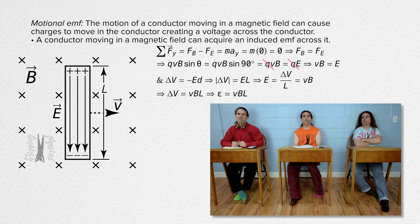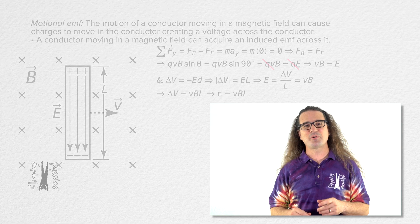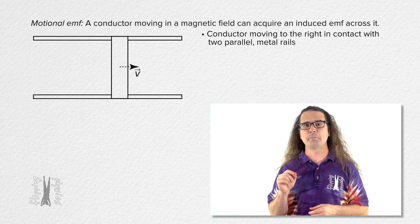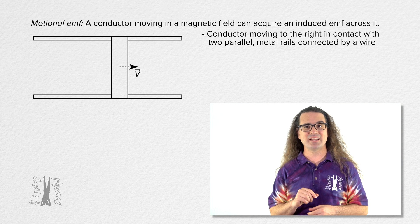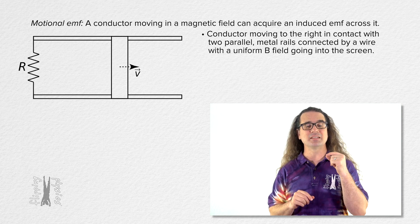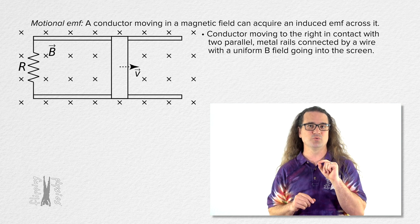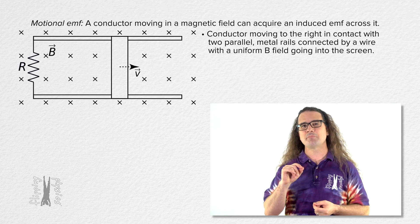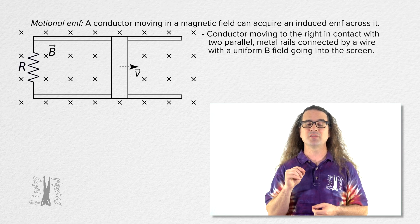You know we love redundancy. This approach starts with a conductor moving to the right while in contact with two parallel metal rails connected by a wire at the left end, with a uniform magnetic field going into the screen. The resistance of the circuit is represented by the resistor shown in the wire on the left.